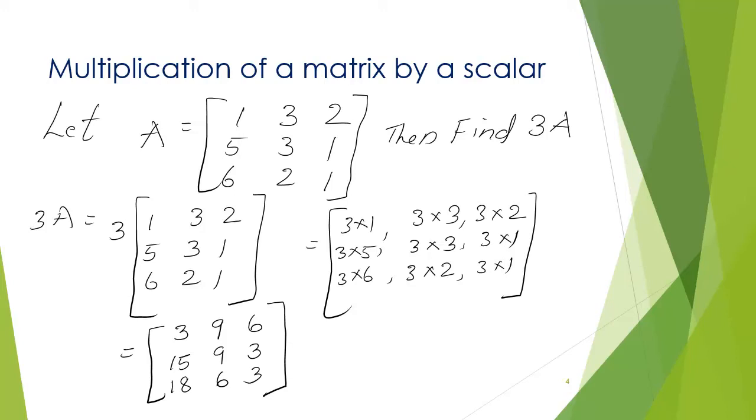So, we get 3 into 1, 3 into 3, 3 into 2, 3 into 5, 3 into 3, 3 into 1, 3 into 6, 3 into 2, 3 into 1. So, what we get? Final answer 3, 9, 6, 15, 9, 3, 18, 6, 3.